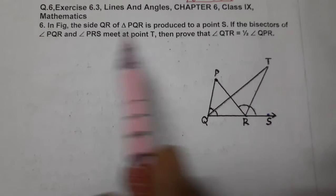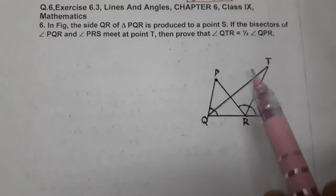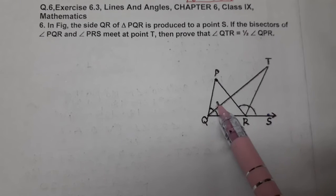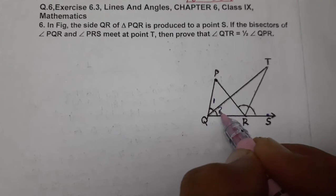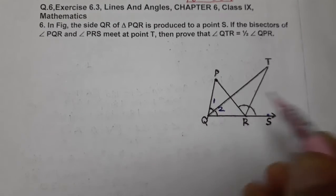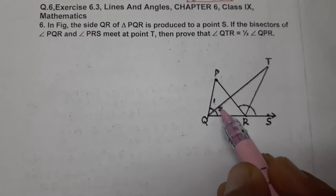If the bisector of angle PQR - this is the bisector QT - and we know the bisector divides the angle into 2 equal angles. So angles 1 and 2, let it be 1 and 2. So given 1 equals 2.